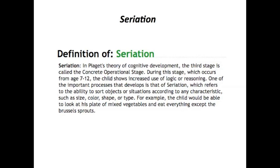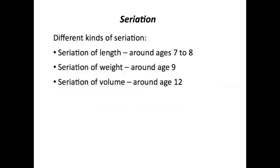One of the important processes that develop is that of seriation, which refers to the ability to sort objects or situations according to any characteristic such as size, color, shape, or type. For example, the child would be able to look at his plate of mixed vegetables and eat everything except the Brussels sprouts. What the child did is he looked at the plate and rank ordered what was on that plate from what he liked the most down to what he liked the least, and then he didn't eat what he liked the least.